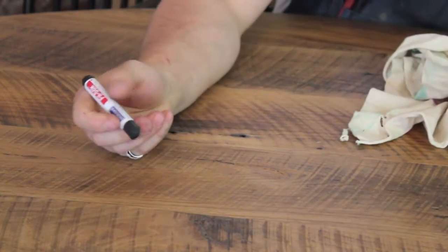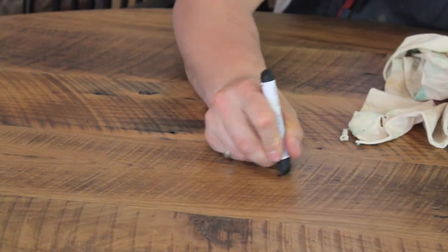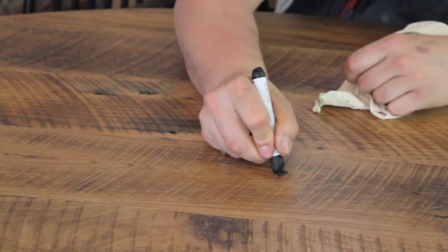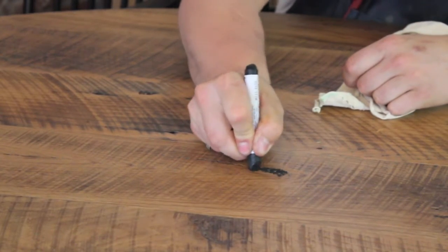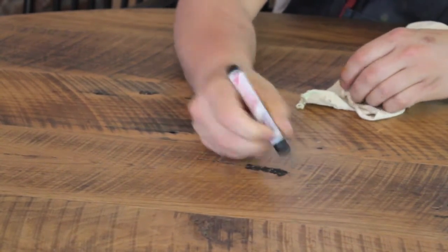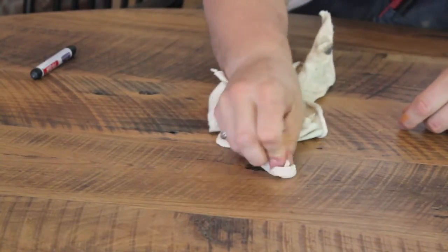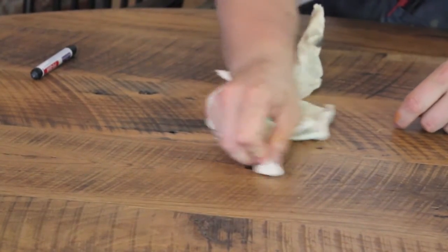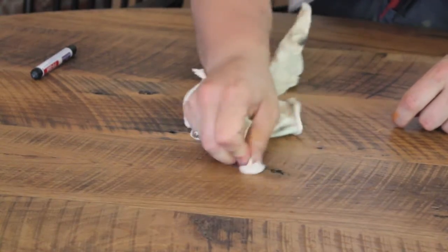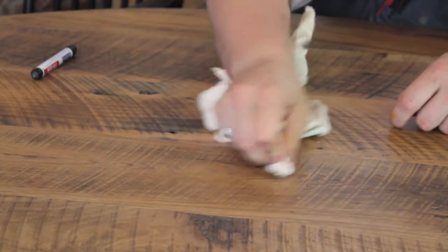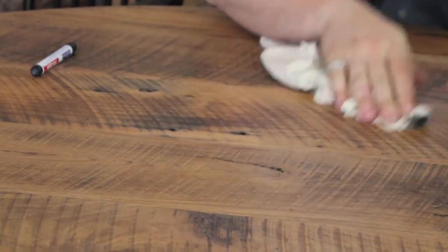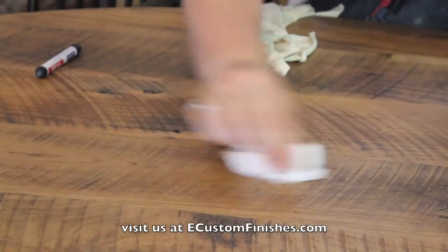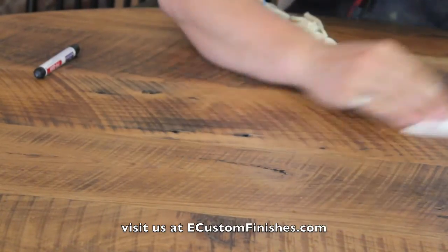And just like I mentioned before with the wax stick or the crayon, kind of just try and work it into the grain wherever it's catching. Use a dry rag, wipe it away, work it in. And that remedies your problem of everything catching.